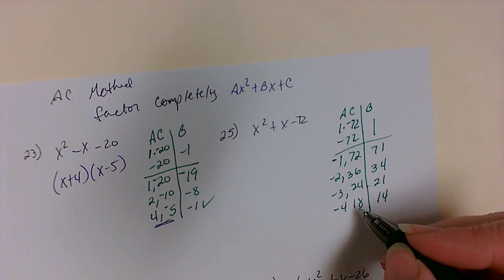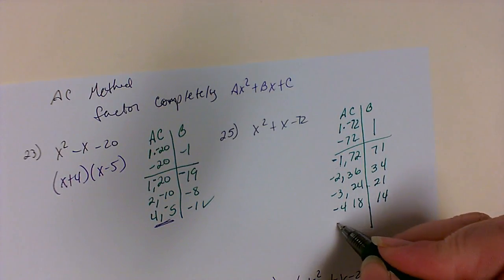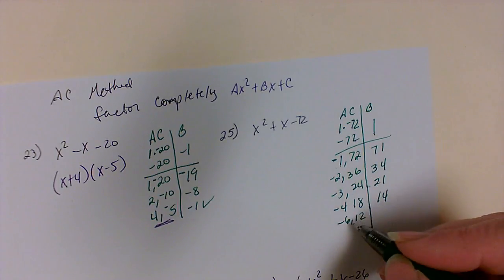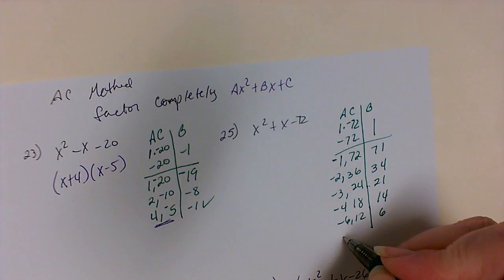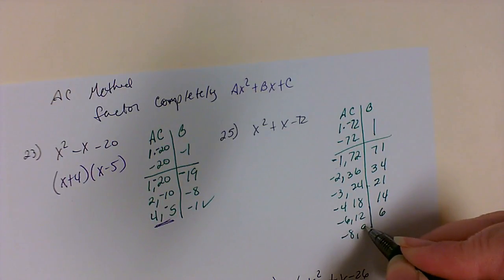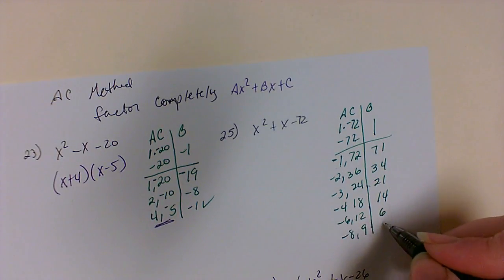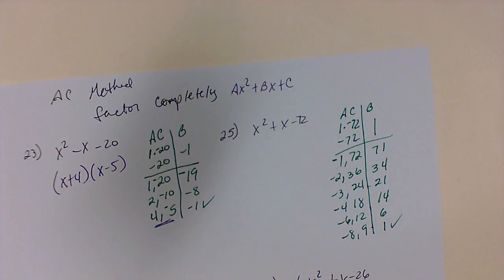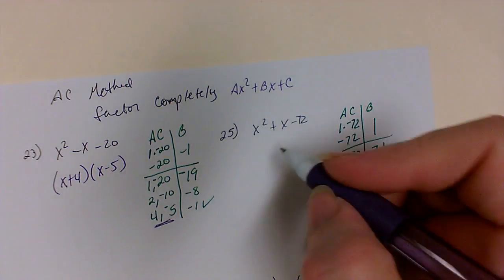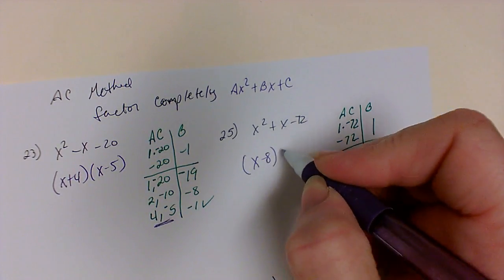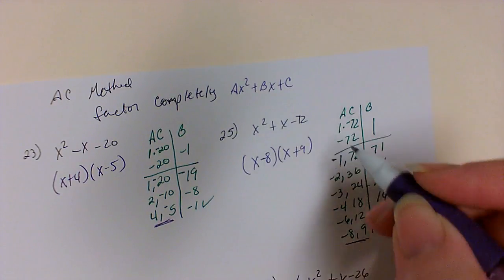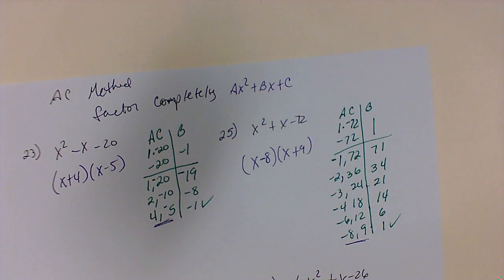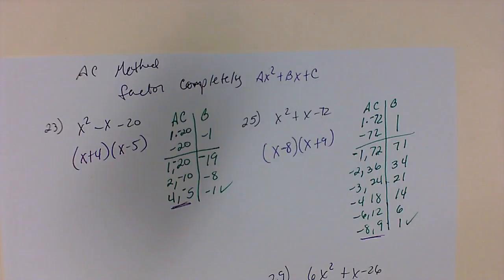5 won't go in, but 6 will: negative 6 times 12 gives me 72; add them, get 6. Then negative 8 times 9 is 72; add them — there's my 1. So I can go straight to my answer with these two values: x minus 8 times x plus 9. And that is all you have to do to factor using the AC method with a 1 out front.